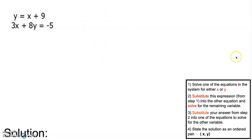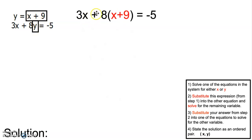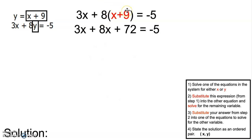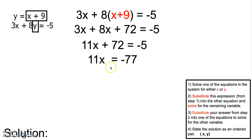In this next example, step one says to solve one of the equations for either x or y. The first equation already has y solved for, so that becomes our big box. Our little box is going to be the y that the expression is equal to — that's the substitution we're going to make. So 3x plus 8 in the big box gets substituted into the little box: instead of y, we have x plus 9. Now we distribute the 8 across x plus 9 to get 8x plus 72 equals negative 5. Combine 3x and 8x to get 11x, subtract 72, and divide by 11. We now know x is negative 7.